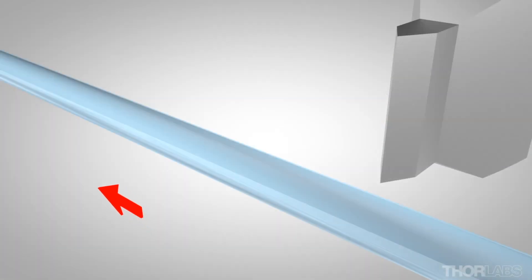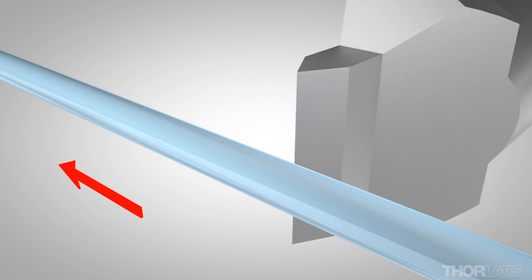The cleavers use a tension and scribe technique. The fiber is first placed under a known tension. Then, a diamond cleave blade moves gradually forward in a pecking motion until the blade just strikes the fiber, causing it to cleave.